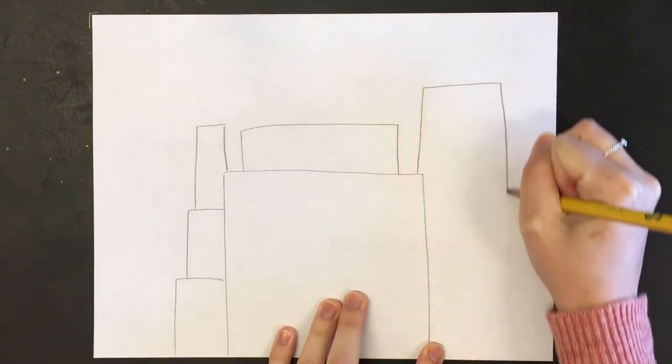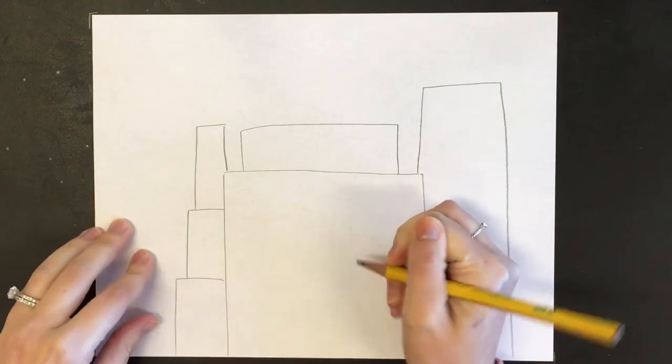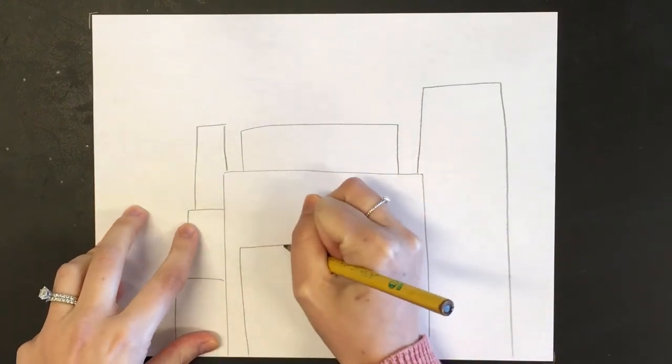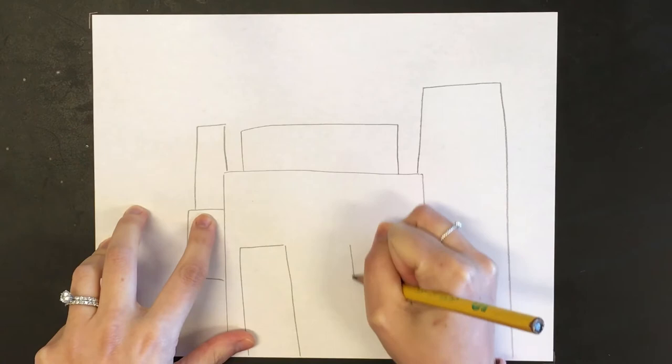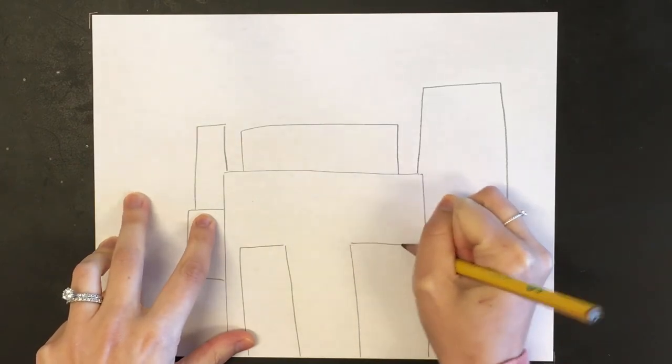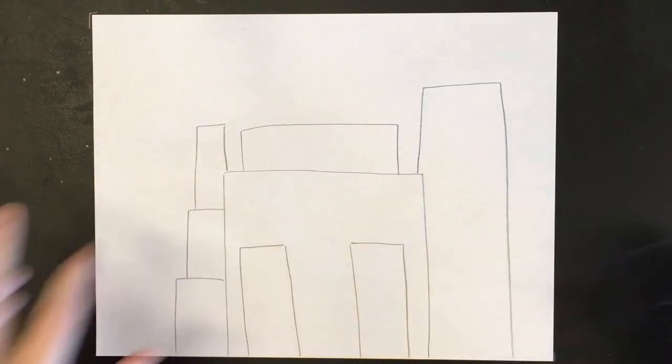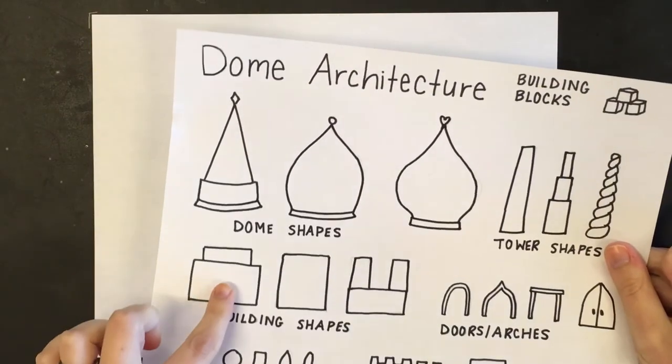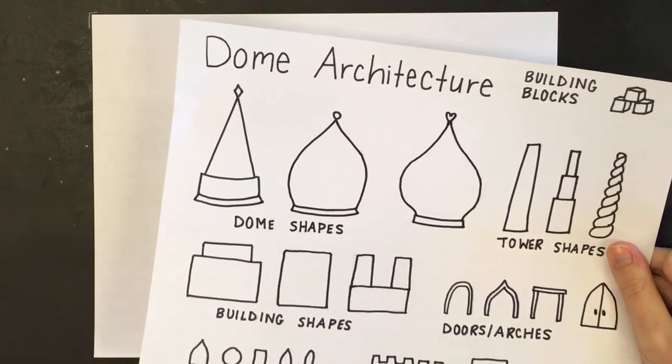A big tower over here, and I can overlap, which means I could put some smaller blocks in the front. So that is step one. Remember, I don't want you copying exactly what I'm doing. Look at those worksheets and think of your own ideas. On the dome architecture worksheet I have different building shapes to get you started.